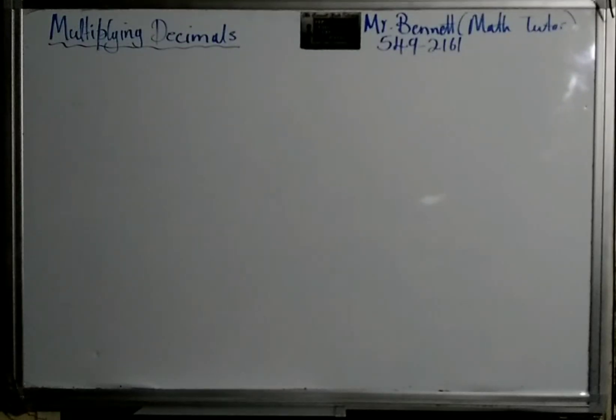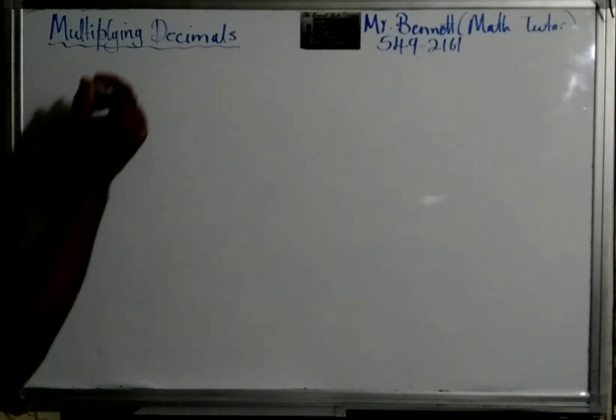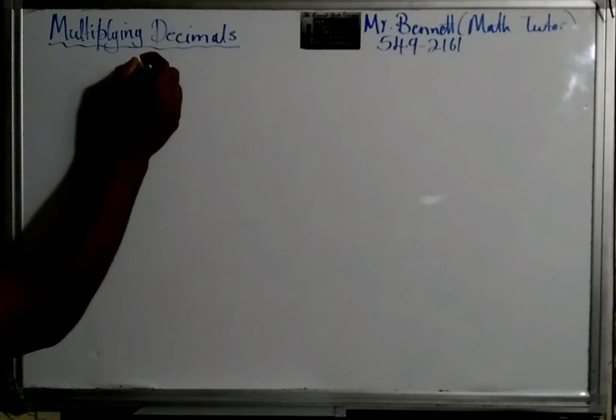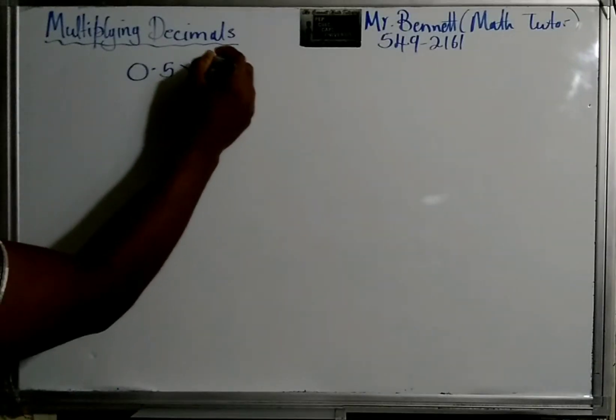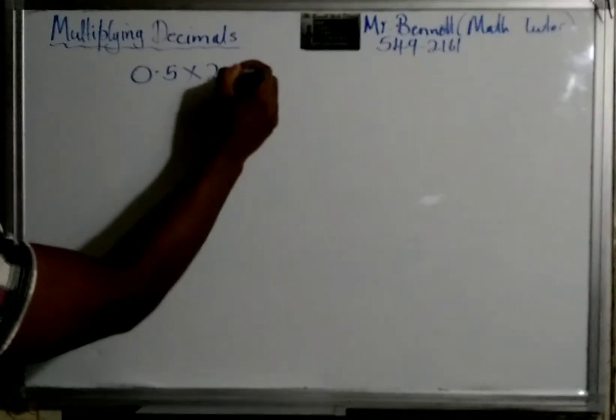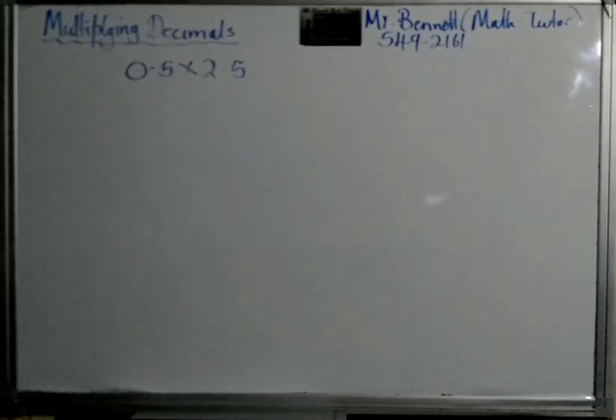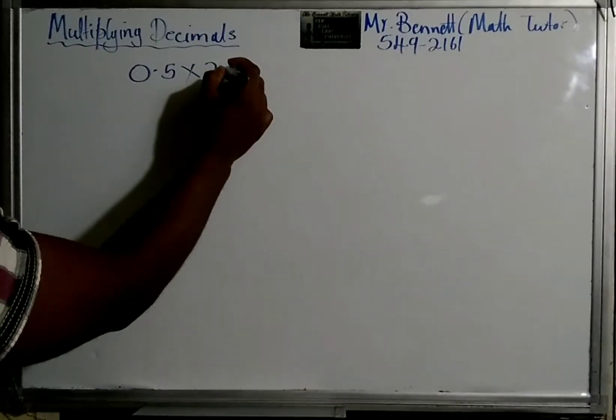All right, we'll be looking at multiplying decimals. The thing about decimals, let's just look at it. Say we have 0.5 times 2.5. What you can do is simply ignore the decimal point.